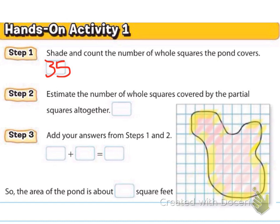That was just completely me trying to make it work, not exact, just estimating. So I'm going to say that is nine. We're going to add the two together, 35 square feet and the 9 square feet, and we're going to say that it's a total of 44 square feet. So the area of the pond is about 44 square feet.